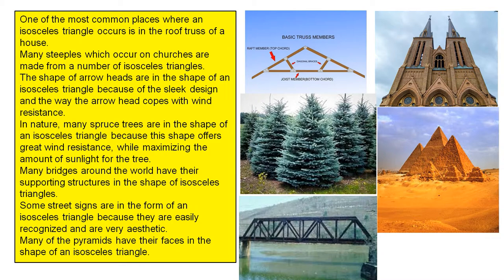One of the most common places where an isosceles triangle occurs is in the roof truss of a house. Many steeples which occur on churches are made from a number of isosceles triangles.